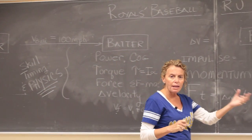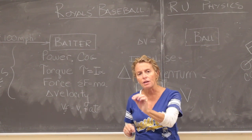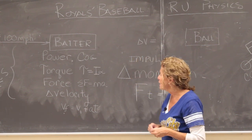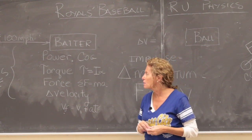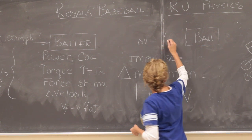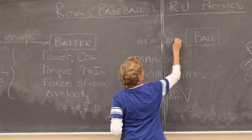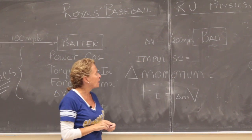So the ball is coming at me at 100 miles an hour and I need to stop it and have it go the opposite direction. So let's just say I'm going to hit it and it's going to leave my bat at 100 miles an hour. What that requires is a change in velocity of the ball of 200 miles per hour. It's got to stop it and get it to go the other way.